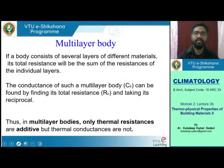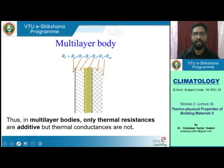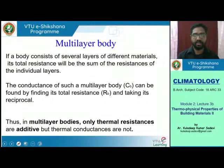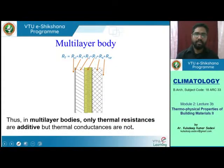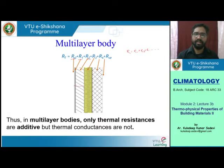From the last lecture, we discussed multi-layer bodies where only thermal resistances are additive. Resistances are directly additive: total resistance is R1 plus R2 plus R3 and so on. If we have different layers with different resistances, we add them to get the overall resistance, and then the conductance is 1 by R. That is what we discussed in our last lecture.